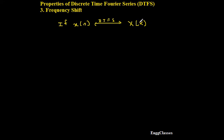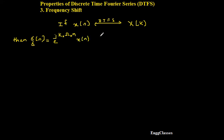then we consider another new signal g of n, which is equal to e to the power j k-naught omega-naught n, multiplied by x of n. Taking the DTFS of g of n leads to X of k minus k-naught. This is the complete statement of the frequency shift property.